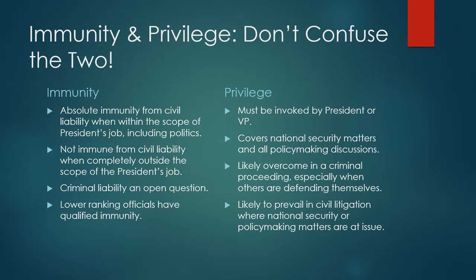As for scope: the privilege protects information that involves national security, classified information, or advice — conversations with the president or vice president in which policy-type advice is given. That privilege is likely to yield if the two people are not talking about national policy, but instead about committing a crime or some other corrupt endeavor. In that case, it probably would not be covered under executive privilege.